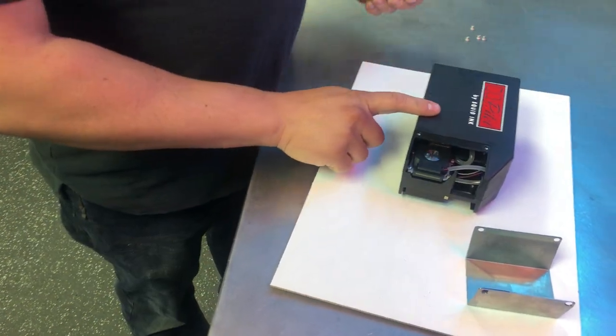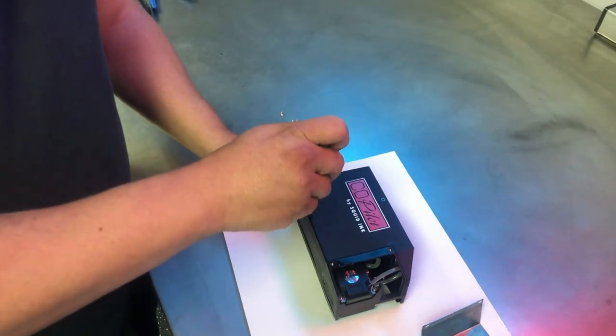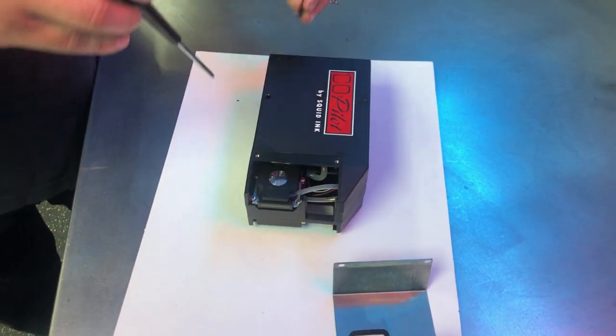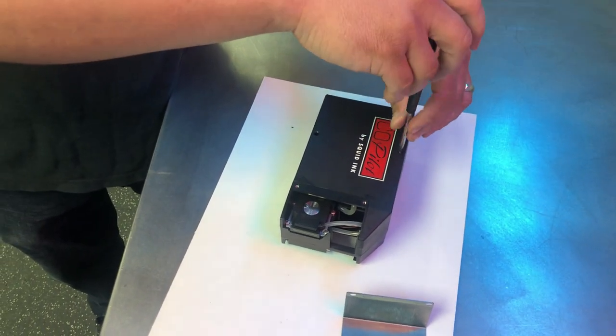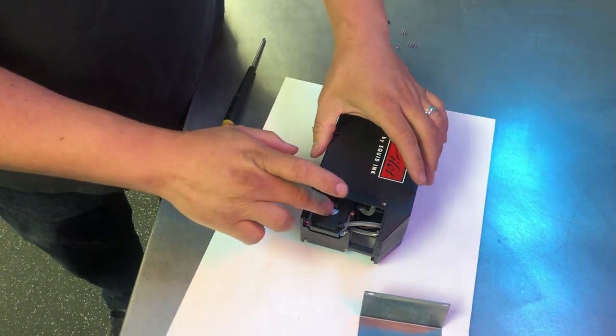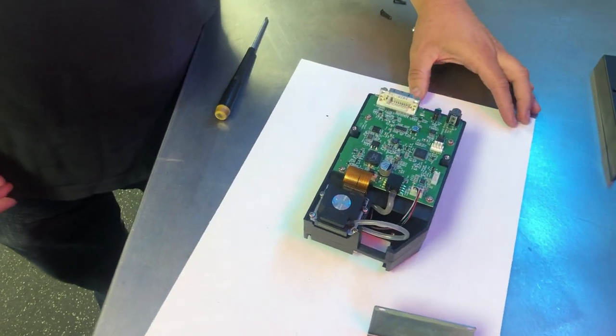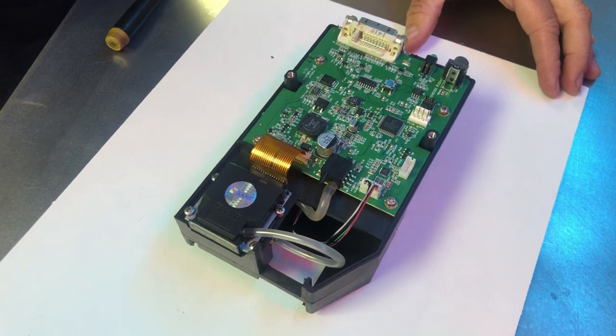Now we'll take the side cover off. Two screws here hold that in place. Now you'll have access to the insides of the Co-Pilot 128 printhead.